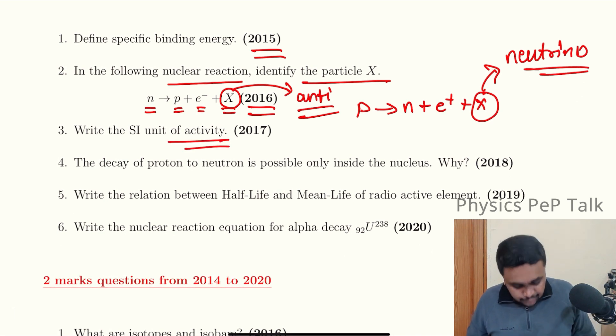Next, write the SI unit of activity. It is becquerel. Becquerel is the SI unit of activity.